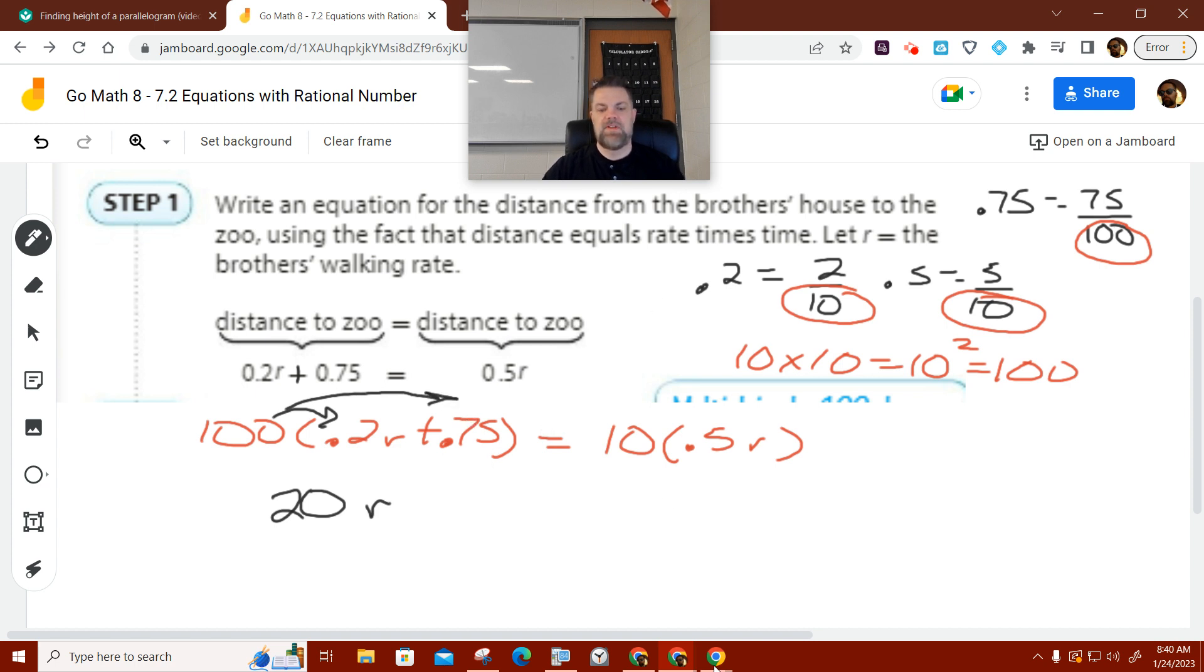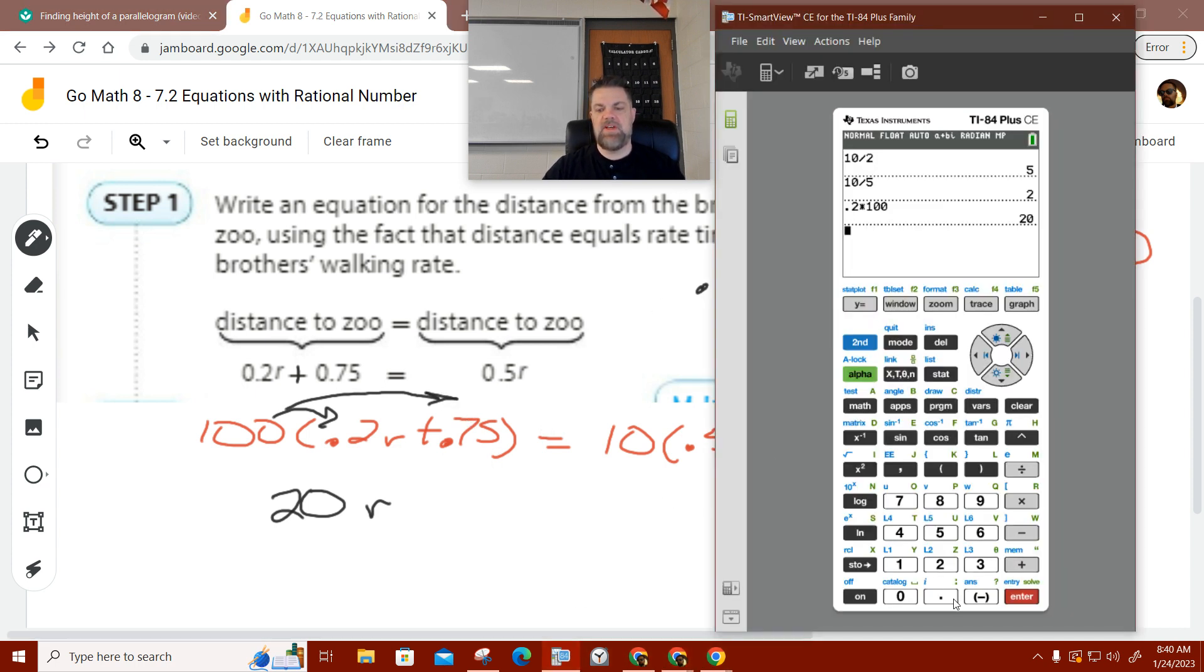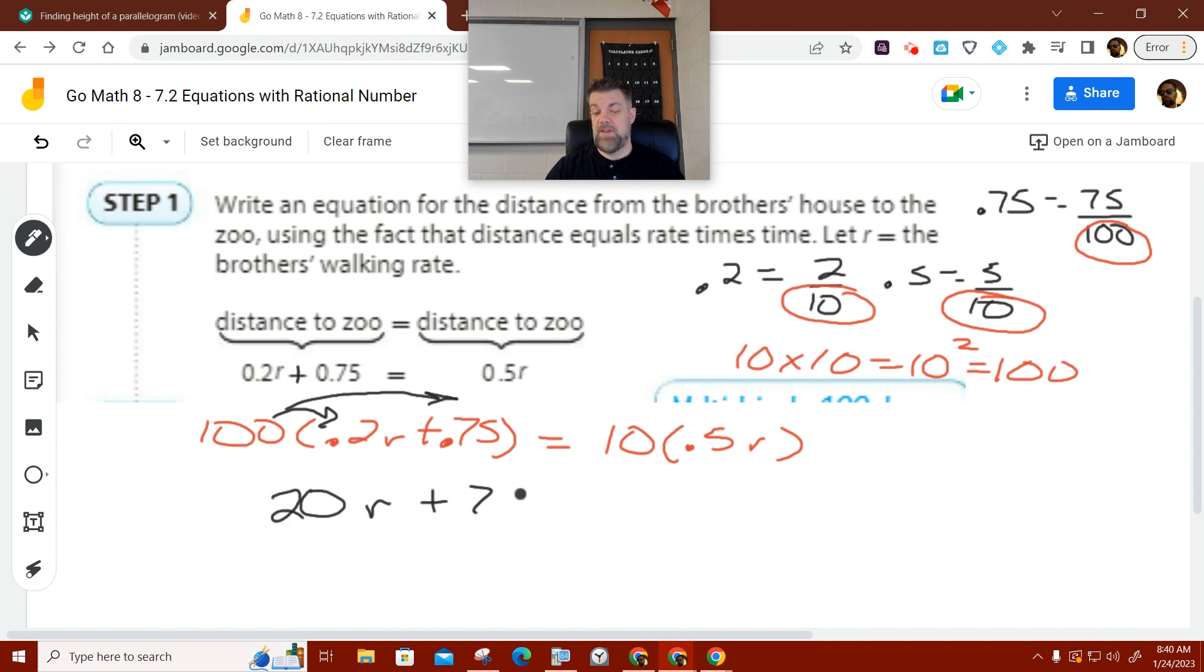And then a hundred times 0.75, it should be 75. But you know what? Let's double check just to make sure. So 0.75 times 100 is 75. And then I'm actually multiplying by 100. Why didn't you guys tell me? Remember, whatever you do on one side, you have to do the exact same thing on the other side.